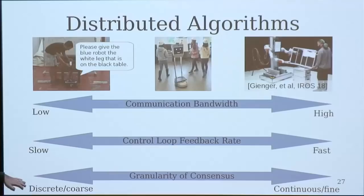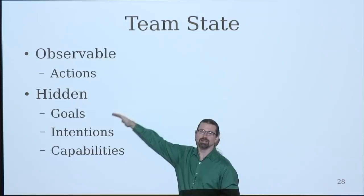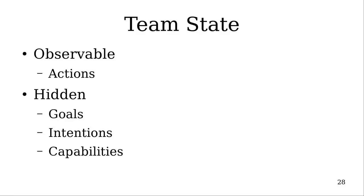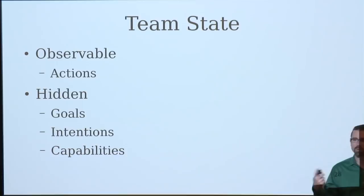Aligned with that, we have this granularity of consensus, which mirroring what we saw before, if you have a slow feedback loop, you're going to tend to have more discrete type of consensus in terms of who does what or what order do we do things in and so on. So I'm going to come back to these ideas later on in the talk. But I want to impress on you that most of what the team state is that matters in terms of making these decisions is actually hidden. The only thing that's observable is the actions performed by the team members and the context in which they're performed. But if we're trying to understand and communicate goals, intentions, capabilities, that all is achieved implicitly through the communication.